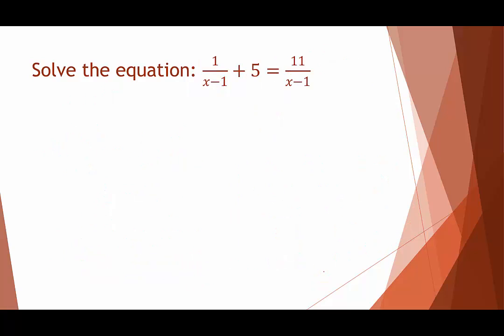In another example, we write the whole number over 1. Looking at the domain restrictions: both non-trivial denominators are x minus 1, so x minus 1 cannot equal 0, meaning x cannot equal 1. We note that restriction and move on. The least common denominator is x minus 1.